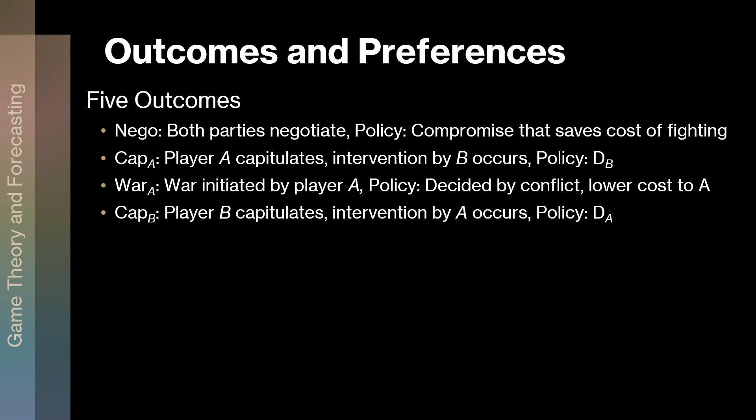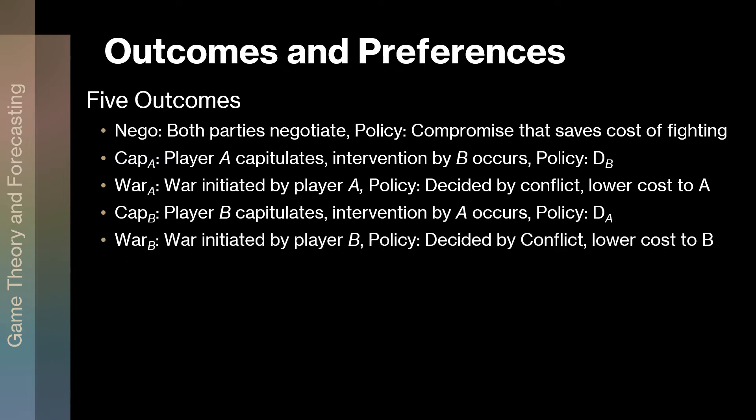Then we have cap B — just the opposite of cap A. B capitulates, A has an intervention, and the policy outcome is A's demand. Finally, war B: same as war A, just flip the script. War initiated by player B, policy again decided by conflict with costs associated. Because B initiates, the costs are assumed to be a bit lower for B.